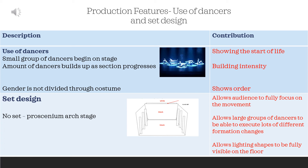Looking at the use of dancers: a small group begins on stage, showing the idea of the start of life, and the number of dancers builds as the section progresses, allowing it to grow in intensity — building alongside other production features such as the oral setting and lighting. Gender is not divided through the costume, as all dancers wear exactly the same costume, showing the idea of order. In terms of set design, there is no set — it's a proscenium arch stage that is completely bare, allowing the audience to fully focus on the movement, enabling large groups to execute formation changes safely, and allowing different lighting shapes to be visible on the floor.